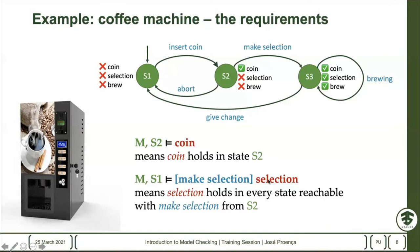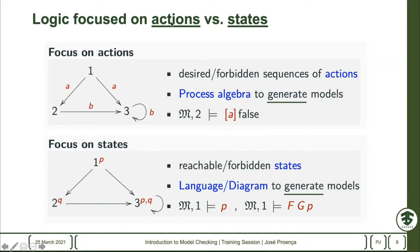The expressivity of this formula captures what kind of requirements we can specify. There are two trends you can see when looking at approaches to model checking. One approach focuses on actions — what possible sequences of actions are possible, not possible, desired, or forbidden in our system. Very often these systems use a kind of process algebra to generate these transition systems, and what we care about is the actions, the traces, and the paths we take.